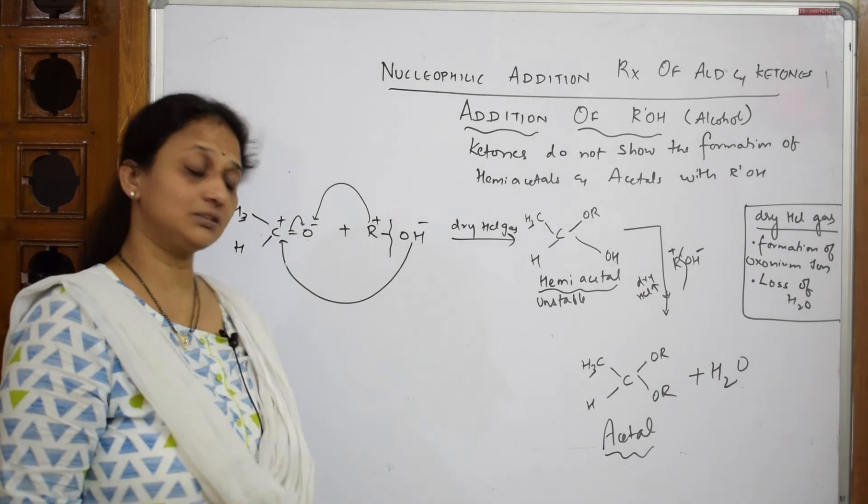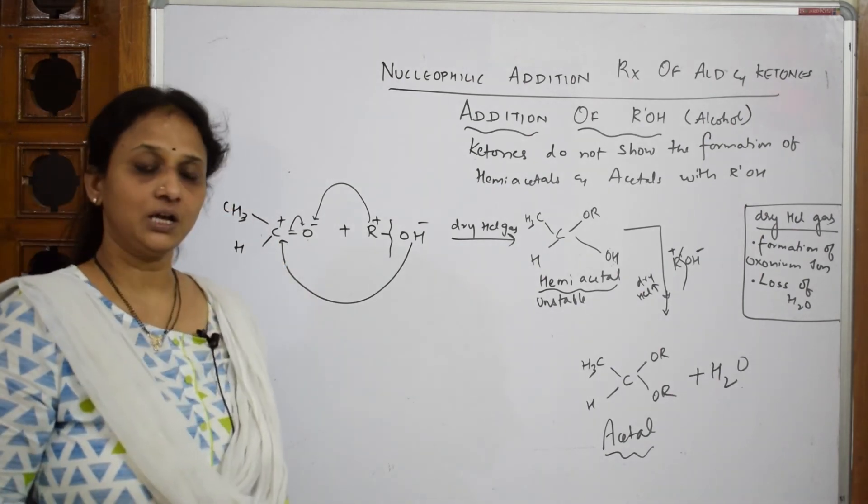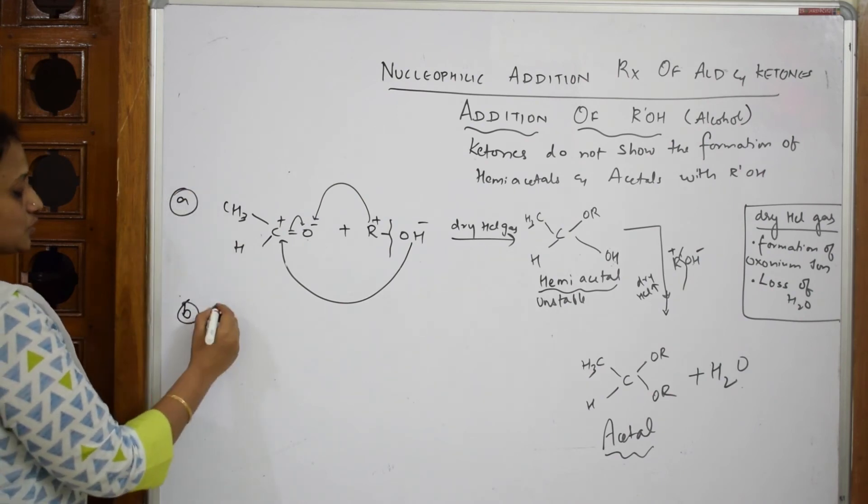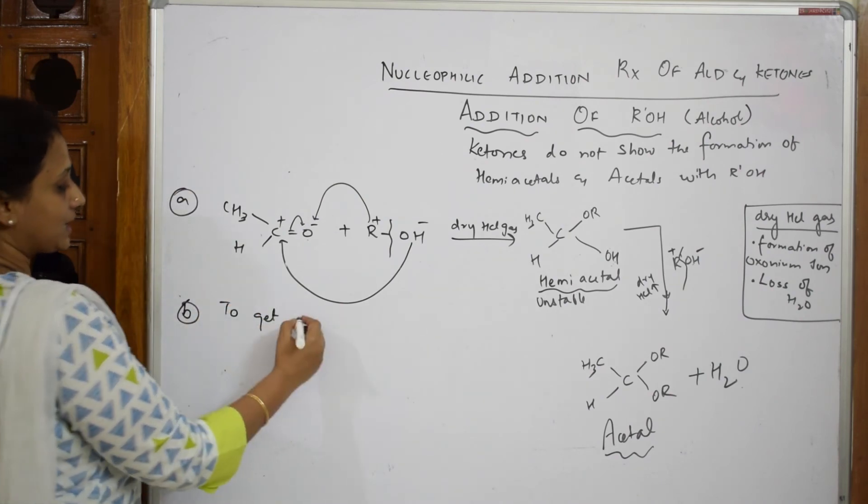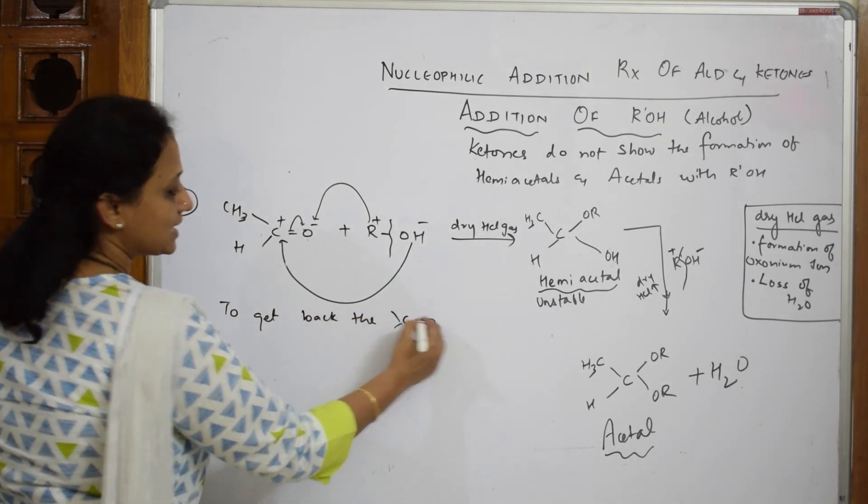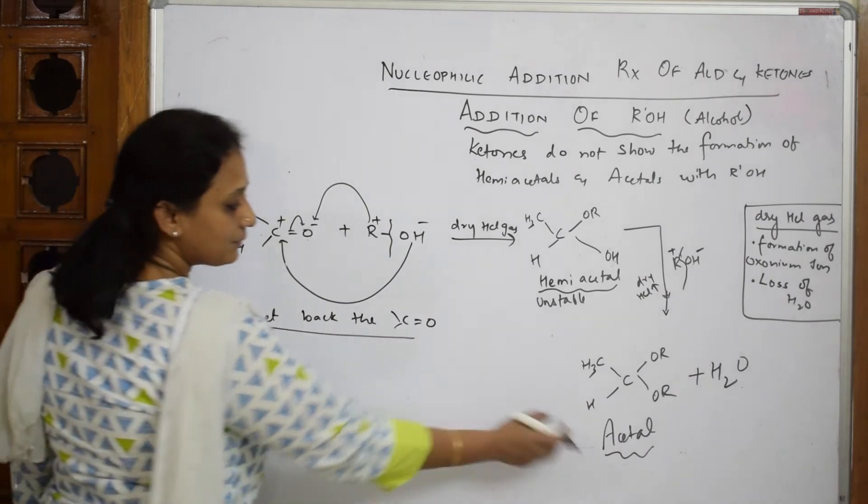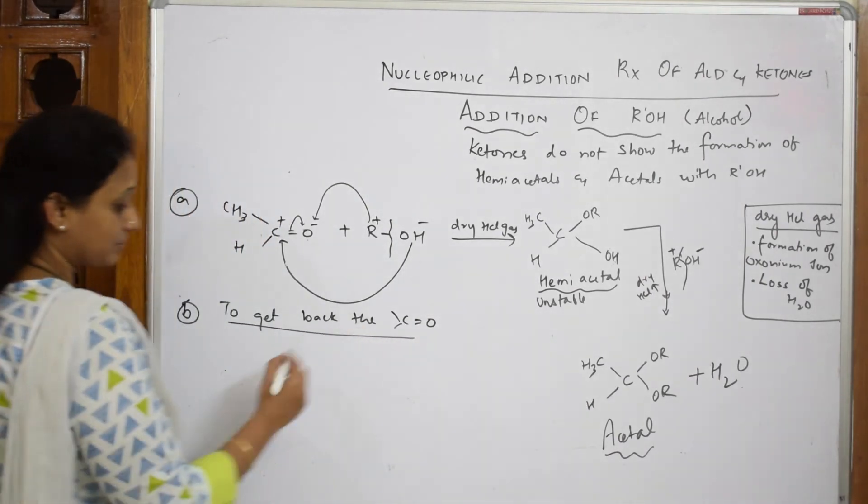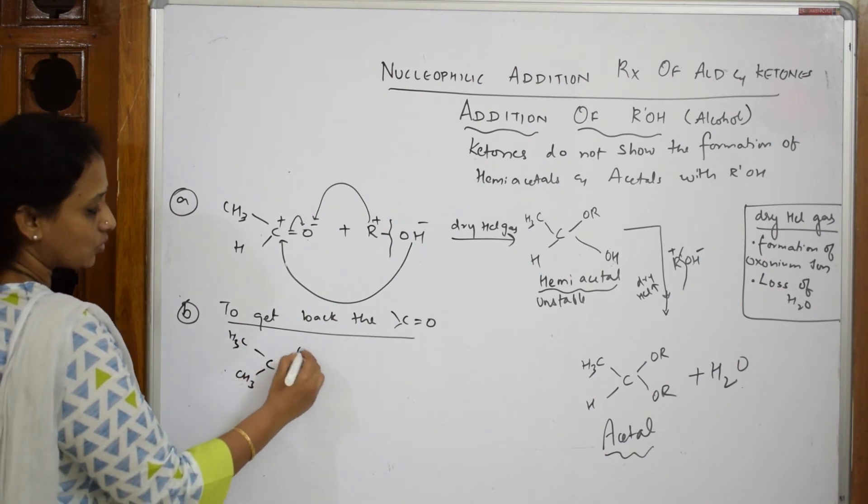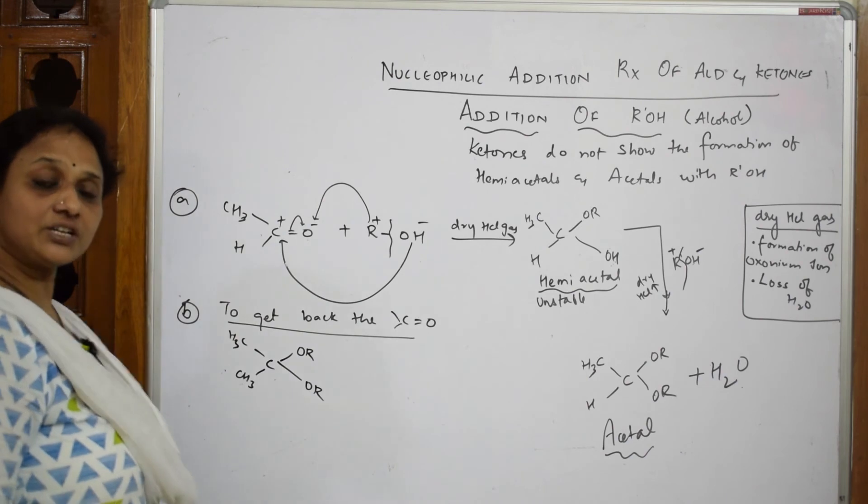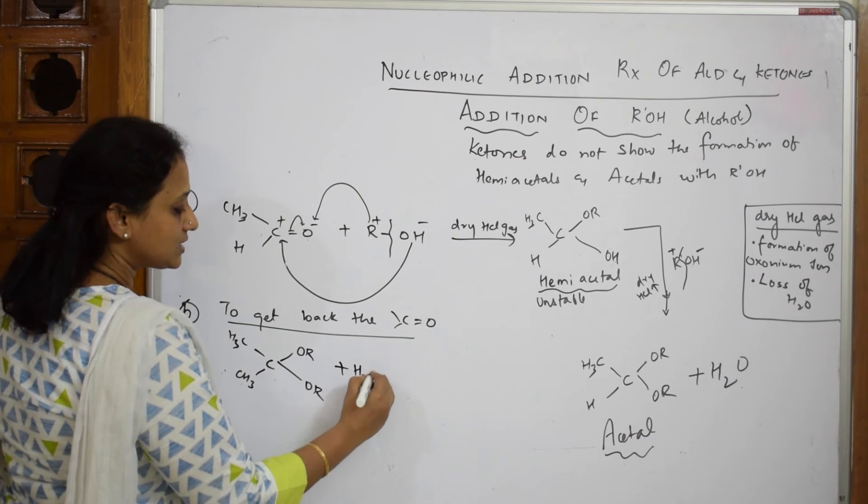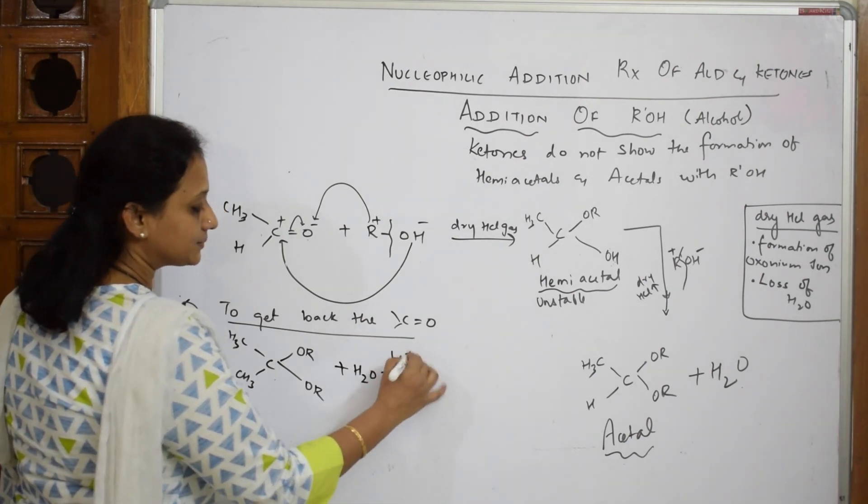Now suppose if I want back the carbonyl compound, what should I do? To get back or retain or get back the carbonyl compound, I want this aldehyde back. What do I do? I am going to pick up this acetal. Take this acetal, CH3, again CH3, your OR and OR. Now try to dissolve it or hydrolyze it in the presence of a mineral acid.